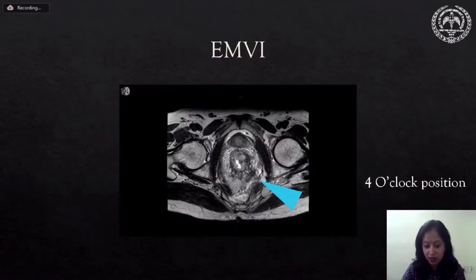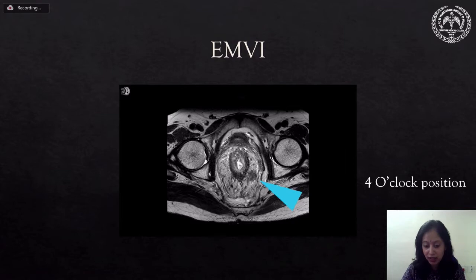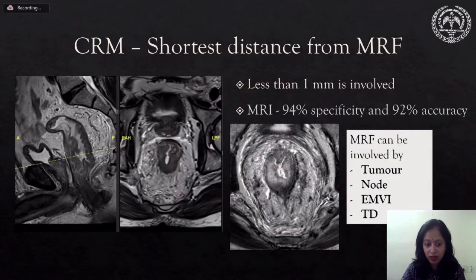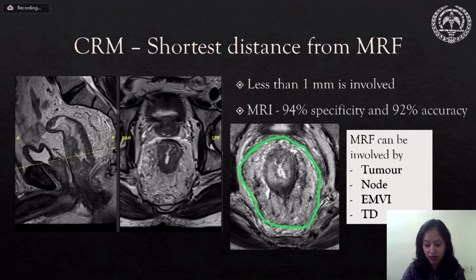EMVI appears as a tumor growing into the mesorectal vein seen as a serpiginous structure in the mesorectal fat. N1C disease is discontinuous and irregular but along the vessel, with similar prognostic significance as EMVI. CRM is a surgical terminology for the plane of TME surgery, extrapolated to MRI by determining the shortest distance between the mesorectal fascia and any of the tumor, lymph node, EMVI, or tumor deposit.